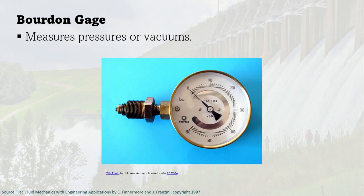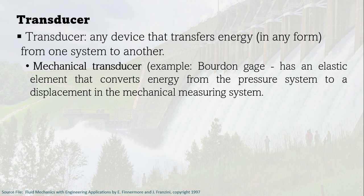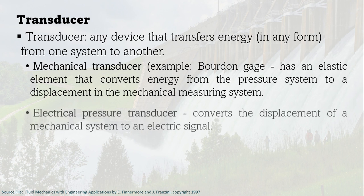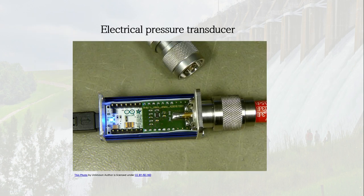Another measuring instrument for pressure is the Bourdon gauge, which is used to measure pressures or vacuums. We also have a transducer — any device that transfers energy from one system to another to indicate pressure changes. The Bourdon gauge is an example of a mechanical transducer because it has an elastic element that converts energy from a pressure system to a displacement in a mechanical measuring system. We also have electrical pressure transducers, which convert the displacement of a mechanical system to an electrical signal to measure pressure.